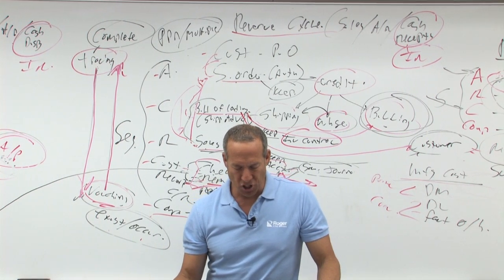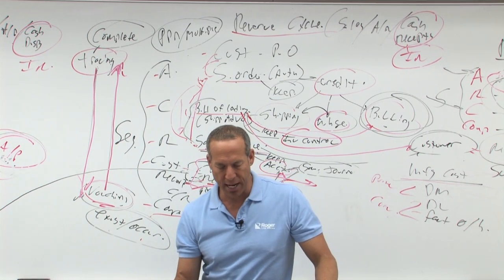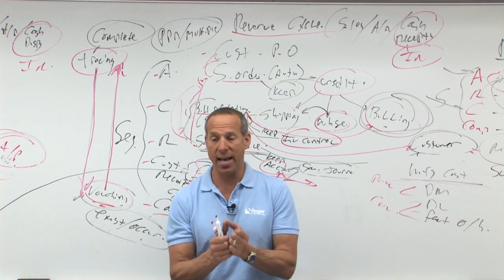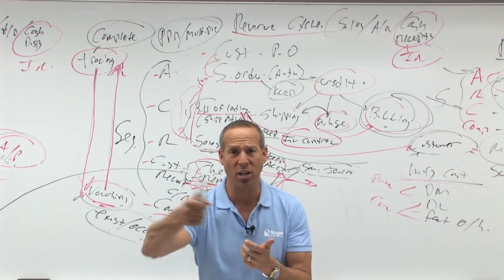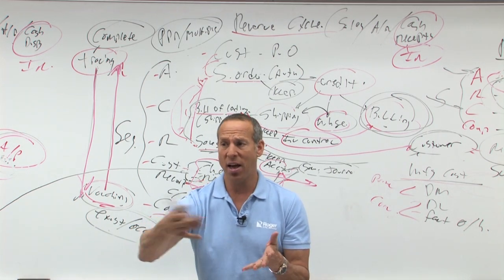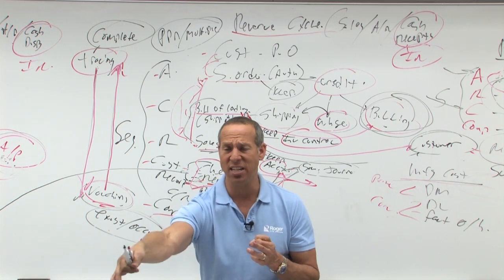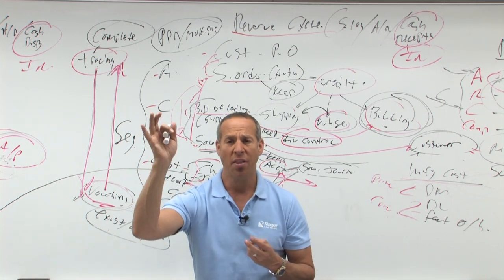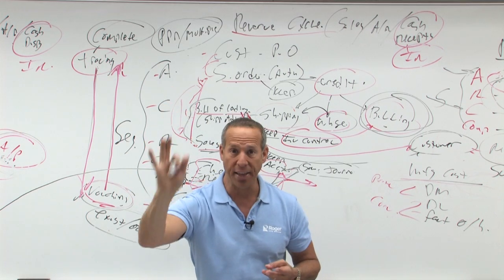Number 16. The auditor may observe the distribution of paychecks to ascertain whether what? Remember earlier I said, as someone's there and they're handing out the checks, what does it tell us? It tells us that what? That person actually exists. They're still a current employee. They have a valid current employee ID. They should be getting paid.